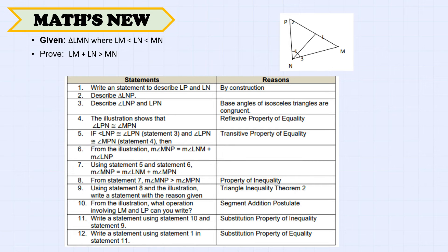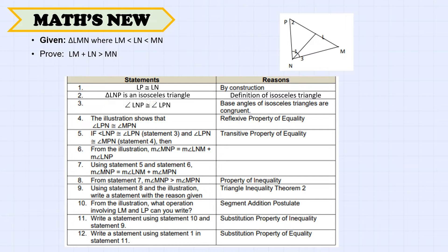To prove LM plus LN is greater than MN: by construction, LP is congruent to LN. Triangle LNP is an isosceles triangle. Therefore, angle LNP is congruent to angle LPN because the base angles of an isosceles triangle are congruent. Also, angle LPN is congruent to angle MPN by the reflexive property of equality.